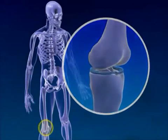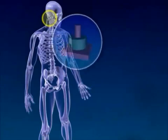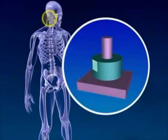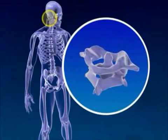Up next we'll be looking at the pivot joint. This joint allows movement around only one longitudinal axis and allows only rotation. Examples include the lower arm bones near the elbow, and the skull or the vertebrae are common.